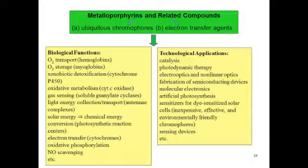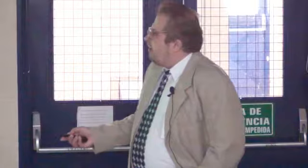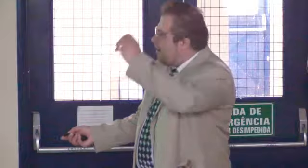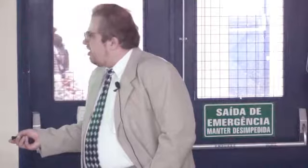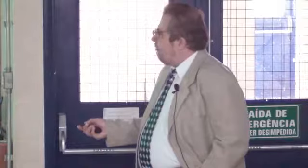Metalloporphyrins are ubiquitous chromophores in nature and also electron transfer agents. This leads to numerous biological functions: oxygen transport in hemoglobins, dioxygen storage in myoglobins, detoxification as in cytochrome P450, oxidative metabolism as in cytochrome C oxidase, gas sensing, light energy collection and transport, solar energy to chemical energy conversion as in photosynthetic reaction centers, and electron transfer in different cytochromes. They also have numerous technological applications in catalysis, photodynamic therapy, electro-optics and non-linear optics, fabrication of semiconductor devices, molecular electronics, artificial photosynthesis, and as sensitizers for dye-sensitized solar cells.